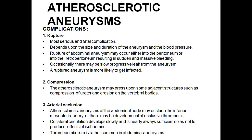The complications created by atherosclerotic aneurysm can be classified in three parts: rupture, compression, and arterial occlusion. Rupture occurs as the aneurysm expands and grows bigger, leading to further weakening of the vessel wall and eventual rupture. It is one of the most serious and fatal complications. Rupture depends on the size, duration of the aneurysm, and the blood pressure to which it was exposed. Usually, rupture of an abdominal aneurysm occurs in the peritoneum or retroperitoneum, resulting in sudden and massive bleeding. There is often slow leakage, and the ruptured aneurysm may get infected.